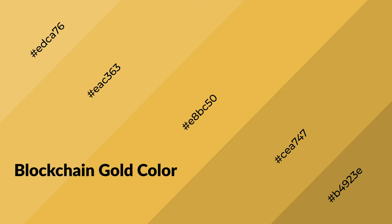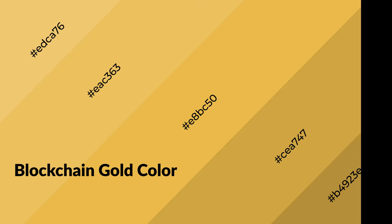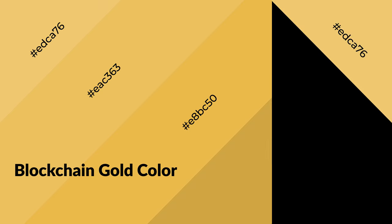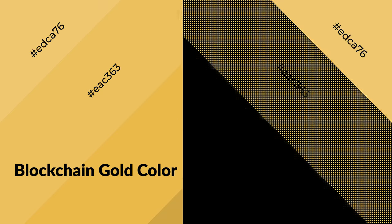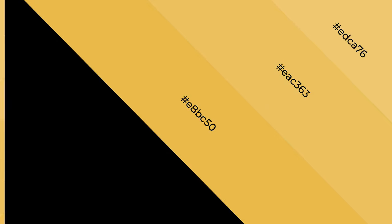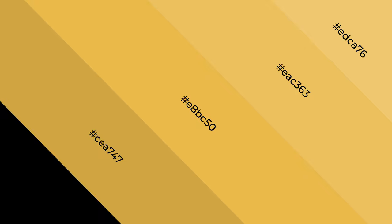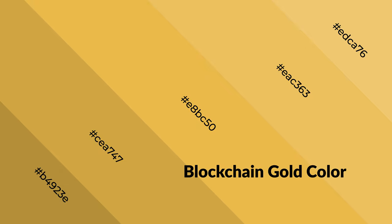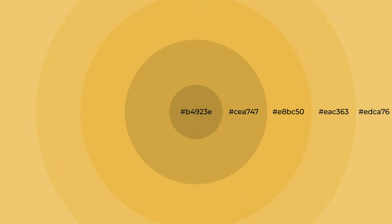Blockchain gold is a warm color and it emits cozier and active emotions. Warm colors are symbols of warmth, fire, heat, and sunshine. It also evokes joy, passion, love, and even anger emotions. You can see them used in restaurants and gyms.